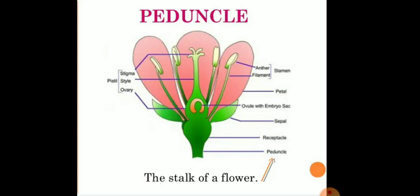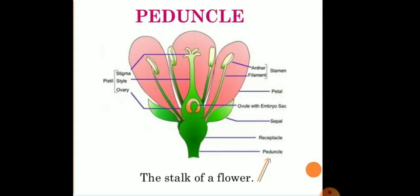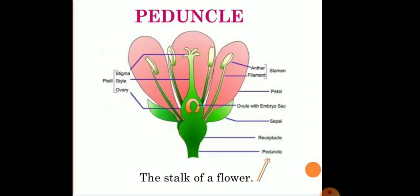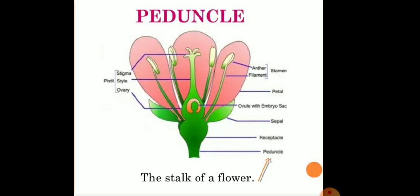The function and uses of the flower include playing a role in reproduction and the multiplication process. Flowers are also used as a source of food and vegetables — like cauliflower and broccoli, which are flowers used as vegetables. They are also used for perfumes, spices, and for their aesthetic value.